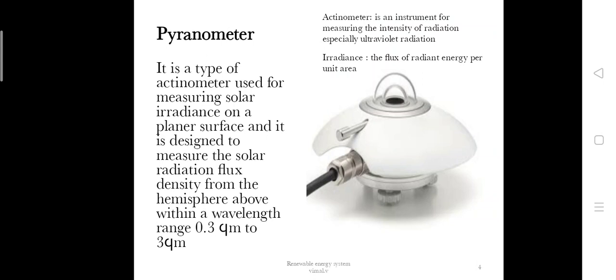It is a type of actinometer used for measuring solar irradiance on a plane surface. It is designed to measure the solar radiation flux density from the hemisphere above within a wavelength range of 0.3 micrometers to 3 micrometers.